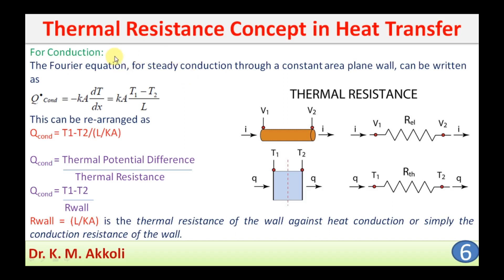First, we take conduction. The Fourier equation for steady conduction through a constant area plane wall can be written as: q_conduction equals minus k dT/dx by Fourier's law. This can be simplified for heat transfer through a plane wall or slab as q equals kA(T1 minus T2) divided by L, where k is the thermal conductivity, A is the area normal to heat transfer, T1 minus T2 is the temperature difference between the two sections, and L is the length of the solid.